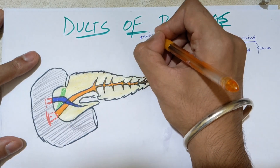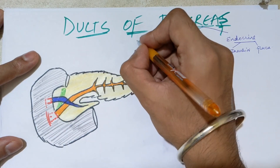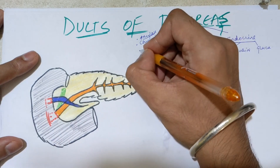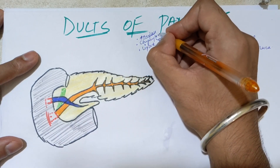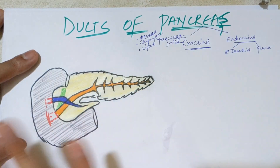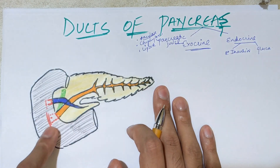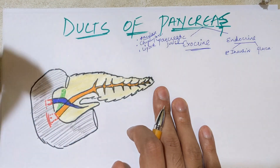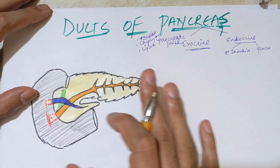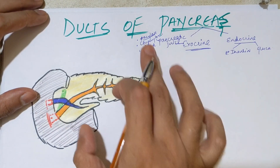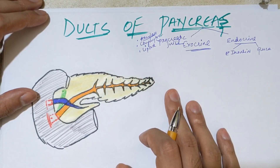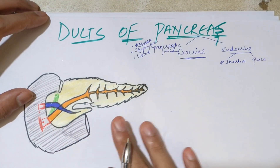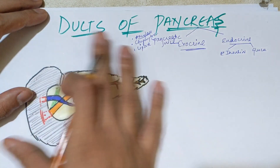The three main enzymes in pancreatic juice are: amylase for digestion of carbohydrates, lipase for fats, and chymotrypsin and trypsin for proteins. These enzymes are released through the ducts via exocrine secretion into the duodenum, where they help in the digestion of carbohydrates, fats, and lipids.